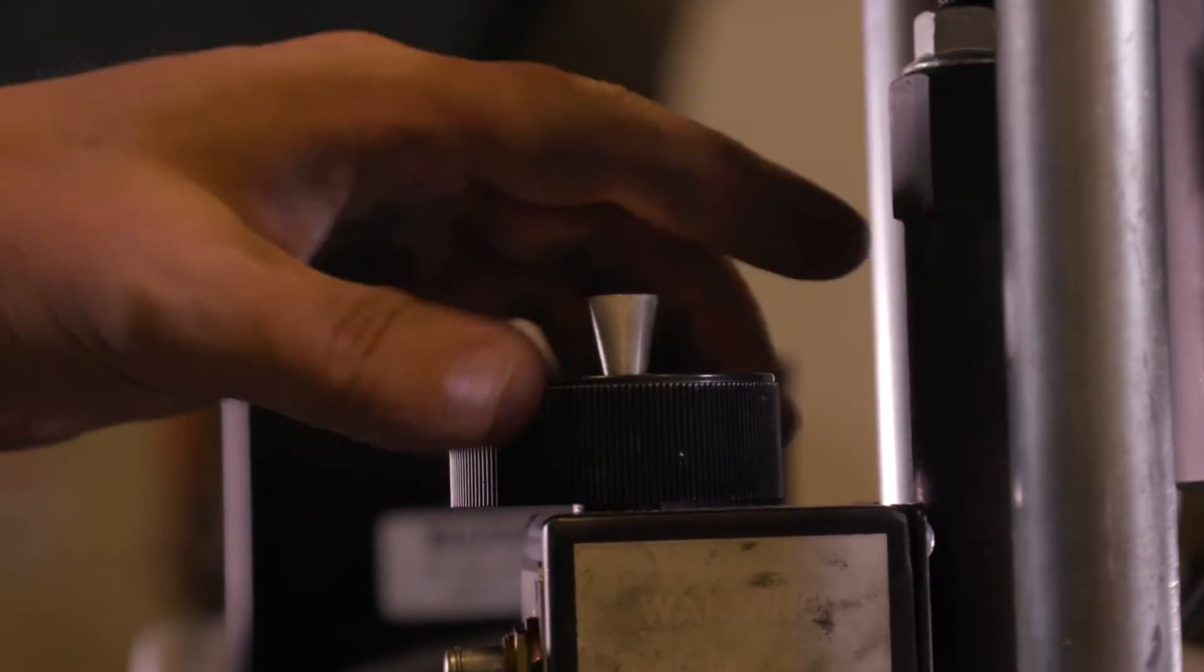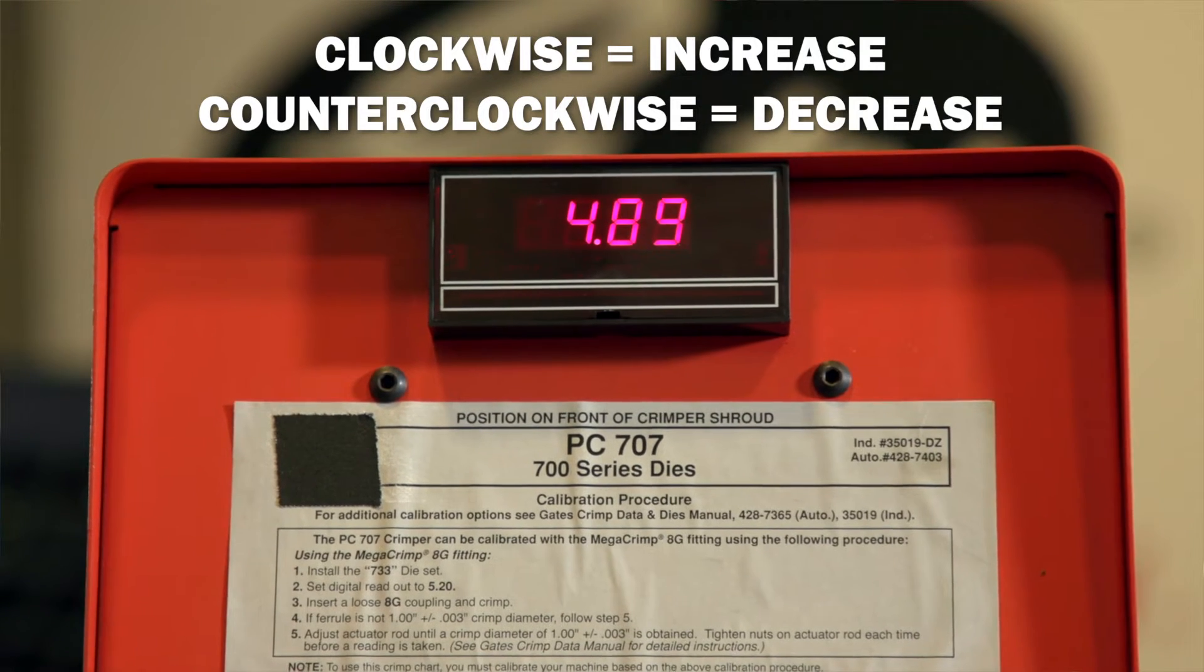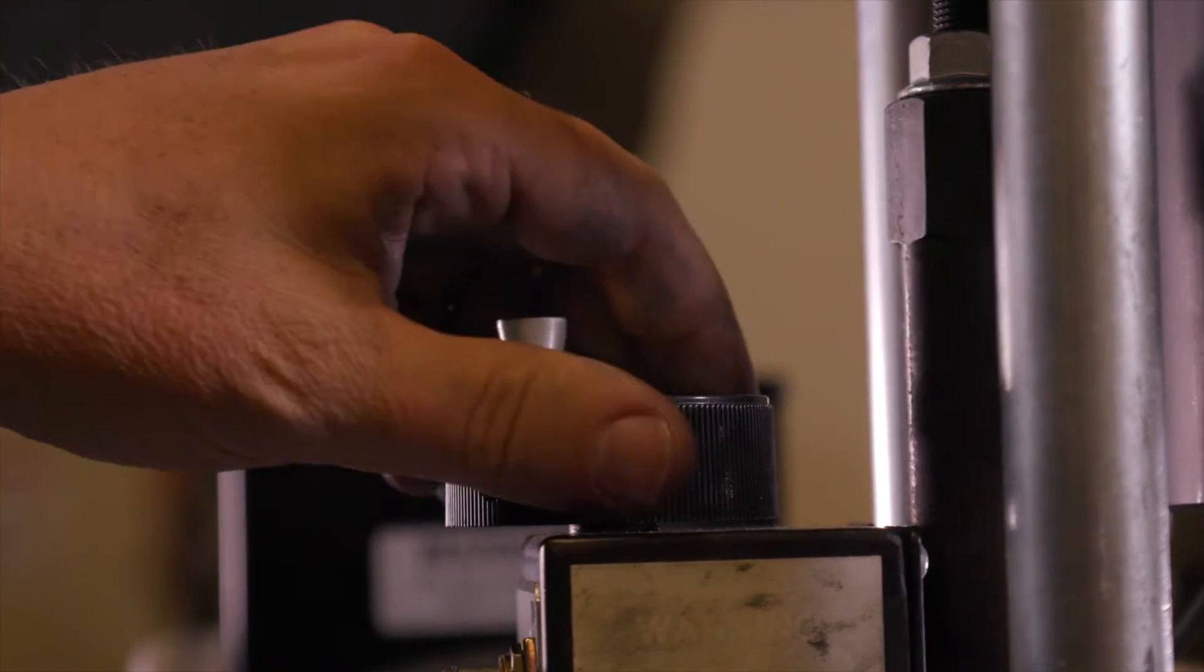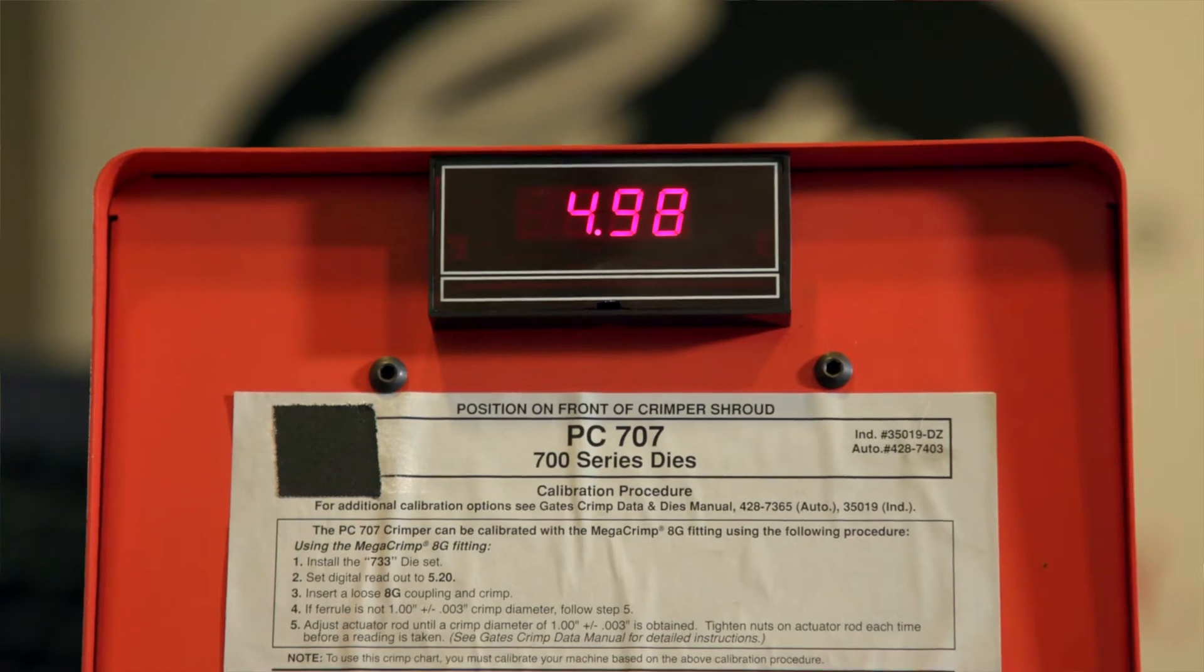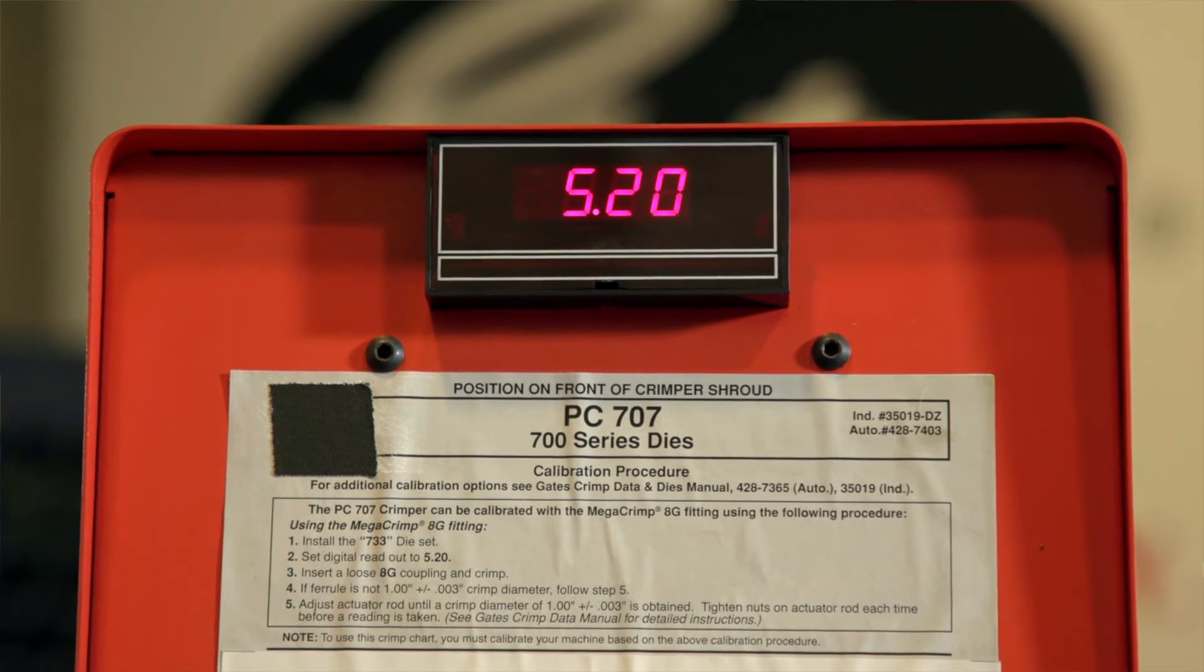Note that rotating the knob clockwise will increase the number while rotating the knob counterclockwise will decrease the number. The readout figures may jump a number like 5.20 to 5.19 or 5.21. This will not affect the crimp outside diameter.